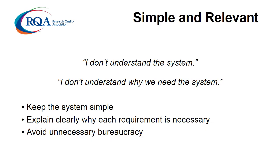The core principles are not about the specific content of the quality system but about its organisation and management. The two biggest enemies to successful implementation come in the form of statements like 'I don't understand the system' or 'I don't understand why we need the system.' So it's really important to keep it simple and relevant. These statements can be used as an excuse to avoid engaging with the quality system. The antidote is to: A, keep the system simple; and B, understand and explain clearly why each requirement is necessary. One of the surest ways to fail from the start is to have even the slightest whiff of unnecessary bureaucracy. Developing lots of documents can be seen to equate to this.